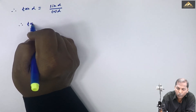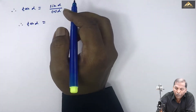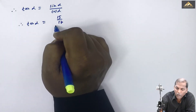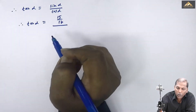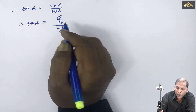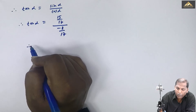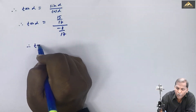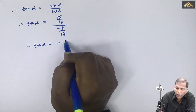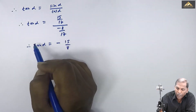Using the formula tan α = sin α / cos α, we get tan α = (15/17) / (-8/17). The 17 cancels from numerator and denominator, leaving tan α = -15/8.